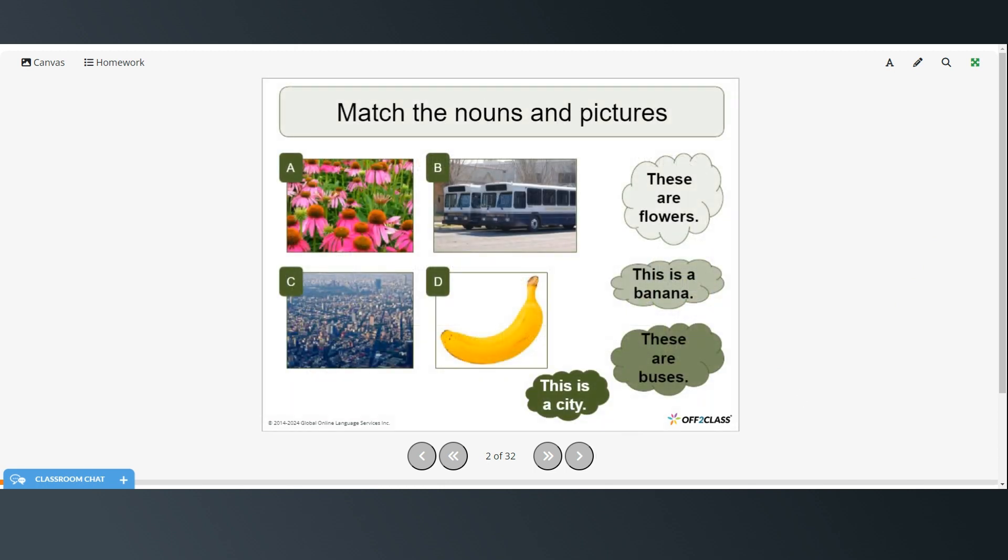Right, so we want to match the nouns with the pictures. So we have the first sentence, these are flowers, that would be picture A. This is a banana, that would be picture D. These are buses, picture B. And this is a city, picture C.